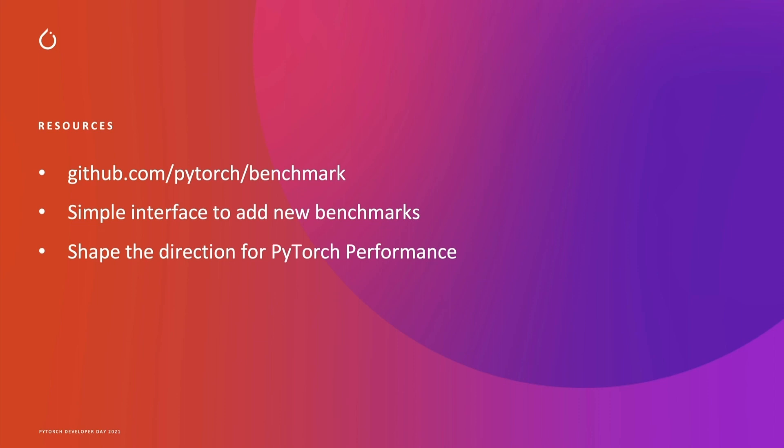And if you're a user of PyTorch who runs PyTorch every day and cares about how fast it can get back to you with an answer, there's a simple way to add new models. You can open an issue or a pull request to bring in a model through a simple interface, or just point us at a model — we'd love to get pointers to models you care about, and we're happy to help you onboard them. We can bring these models into TorchBench and start this feedback loop between users who use PyTorch and the developers who develop PyTorch performance. Thank you.